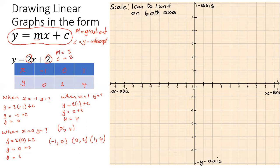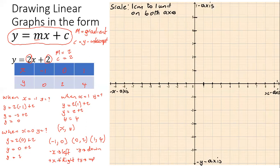Before plotting, remember: a negative x component means movement to the left; a positive x component means movement to the right; a negative y component means vertical movement down; and a positive y component means vertical movement up. The x component is always horizontal movement. Every point we plot is relative to the origin.